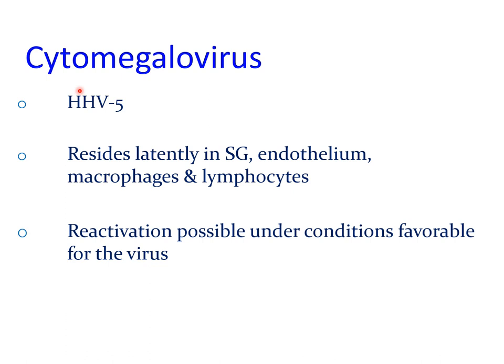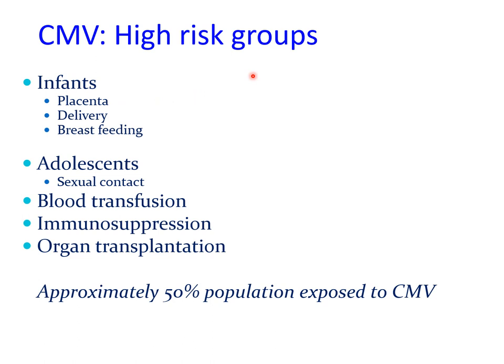Cytomegalovirus is human herpes type 5 virus. It resides latently in the salivary gland, endothelium, macrophages, and lymphocytes, and reactivation is possible under favourable conditions, primarily immunosuppression. High-risk groups include infants, where infection can be transmitted through the placenta, during delivery, or through breastfeeding; adolescents, where sexual contact is the main route; and additionally, blood transfusion, immunosuppression, and organ transplantation. Approximately 50% of the population is exposed to cytomegalovirus.